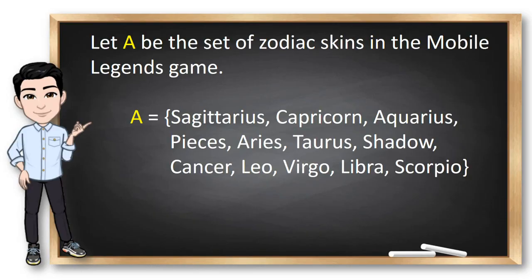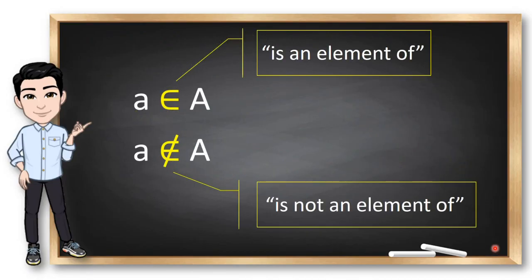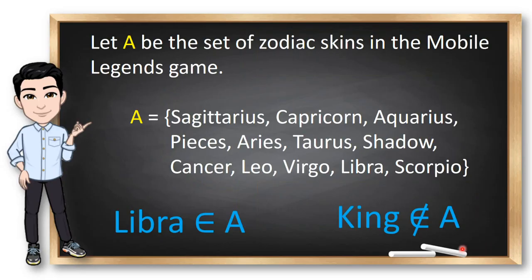So, set A contains Sagittarius, Capricorn, Aquarius, Pisces, Aries, Taurus and so on. We write these symbols to denote that an element is in the set A and these symbols to denote that an element is not in the set A. In the previous example, Libra is an element of A because Libra is in the set. While King, though another skin in the game, is not an element of set A because there is no king here inside the set.